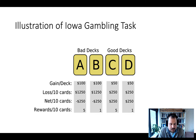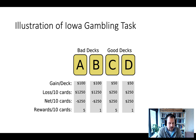The bad decks might be attractive initially because they lead to large gains — say $100 on the first card. You think it's great, then draw another card and get a loss. You keep drawing and have to learn across those four decks which are the bad ones and which are the good ones.